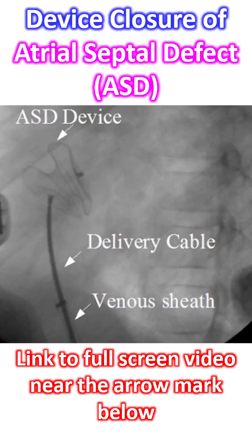Bubbles in the system can get embolized during delivery, with air emboli going into the systemic circulation. If it reaches the cerebral circulation, transient giddiness and altered sensorium can occur. ST segment elevation and hypotension may occur if the air bubbles find their way into the coronary circulation.